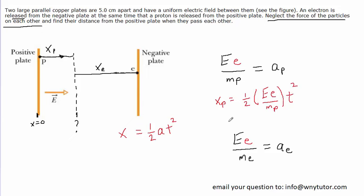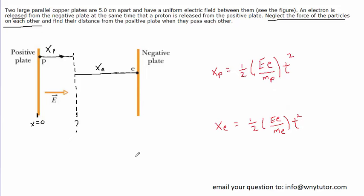For the electron, x-e equals one-half times its acceleration (found earlier) times time squared. The question asks for the distance from the positive plate, which is x-p. So we are looking to solve for x-p.